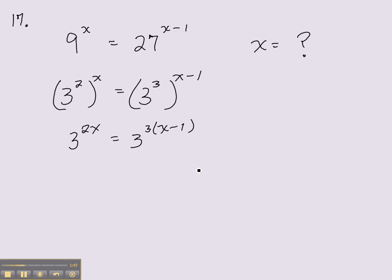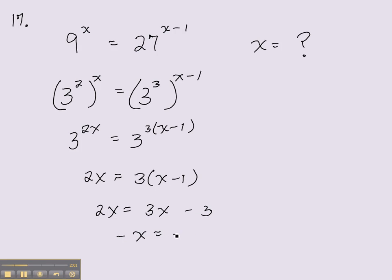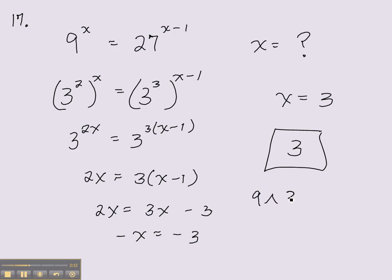Now we see that the bases are the same, so the exponents are equal to each other. It's just a matter of distributing and solving for x. Subtract the 3x, and we find that x is equal to 3. You can use your calculator to check: take 9 to the 3rd power and 27 to the 2nd power and see if you get the same result.